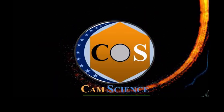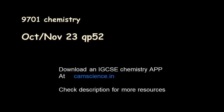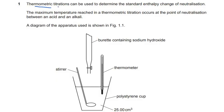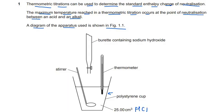In this video we'll be discussing question 1 of question paper 52 of 9701, A-level Chemistry, examination series October/November 2023. Question 1 says: thermometric titrations can be used to determine the standard enthalpy change of neutralization. The maximum temperature reached in a thermometric titration occurs at the point of neutralization between an acid and an alkali. The apparatus used is shown in figure 1.1, which shows a polystyrene cup with 25 cm³ of hydrochloric acid, a thermometer, a stirrer, and a burette containing sodium hydroxide.